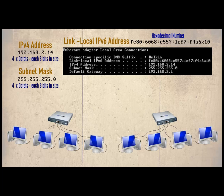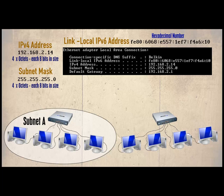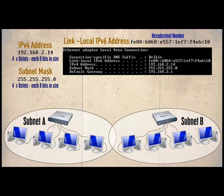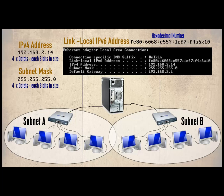IP networks are separated logically into subnets. In our example there are two subnets, A and B. Both subnets remain separate — data can be exchanged within each subnet but not between them, even when both are connected through a physical or wireless connection. One subnet cannot communicate with another without some device or host providing a path between them. To create a gateway from one network to another, it would be possible to install two network cards into a PC and join each network to the installed cards. The default gateway address is the network host which provides an exit point from each subnet.